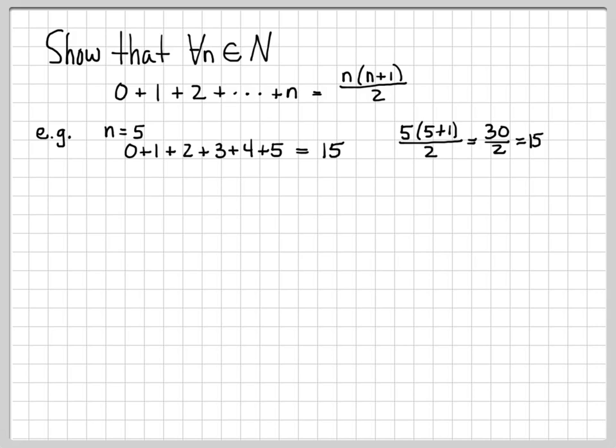0 plus 1 plus 2 plus 3 plus 4 plus 5 does indeed equal 5 times 5 plus 1 over 2. And you can check other points. You could do this for n equals 2, n equals 6, n equals 7, n equals 13, and they're all going to work. So you have a good feeling that this is a true statement, but we're actually going to use induction to prove that it is.